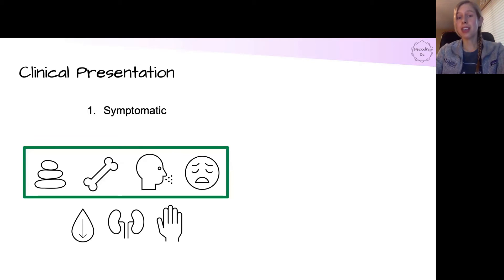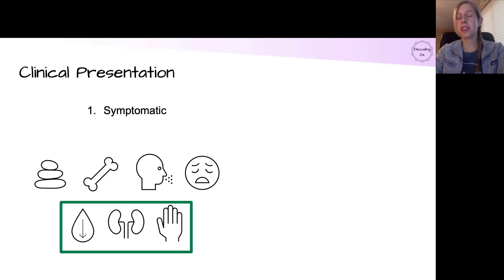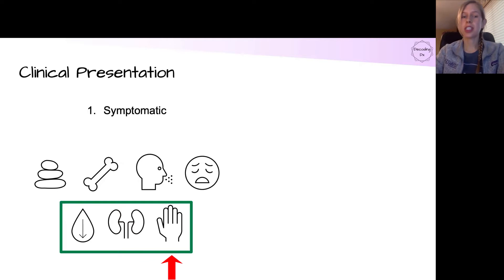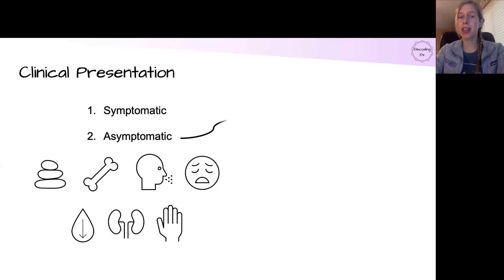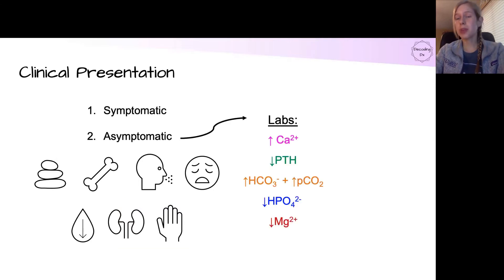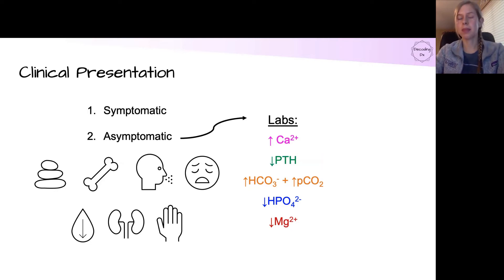In the setting of calcium alkali syndrome, you can also have significant dehydration, acute kidney injury, and tingling, muscle twitches, and lightheadedness from the alkalosis itself. A lot of times patients will actually be asymptomatic, in which case you will find the calcium alkali syndrome on labs. You will see a hypercalcemia with a low parathyroid hormone and metabolic alkalosis.